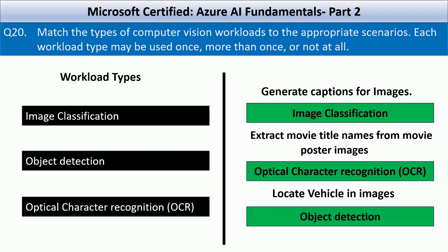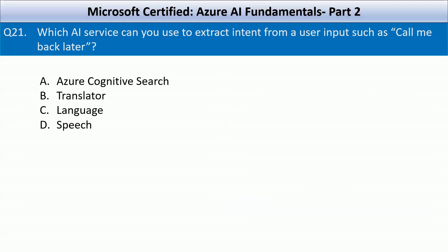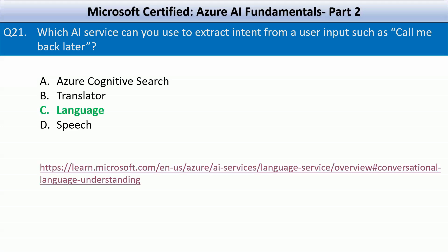Question number 21: Which AI service can you use to extract intent from a user input such as 'call me back later'? Options are Azure Cognitive Search, Translator, Language, or Speech. Azure AI Language provides natural language processing capabilities including intent recognition, which identifies the purpose of user input. Go through the link on your screen to understand more about conversational language understanding, which is the precise answer.